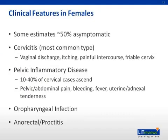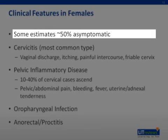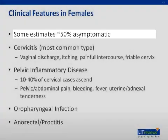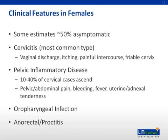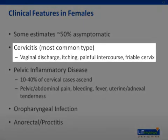Turning to clinical features, starting with females — approximately 50% of females are asymptomatic when infected with gonorrhea. Of those who do have symptoms, cervicitis is the most common type of infection, characterized by vaginal discharge, itching, and potentially painful intercourse. On pelvic exam, you may notice a friable cervix.